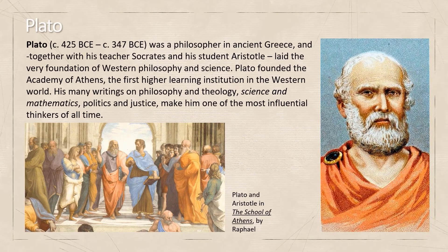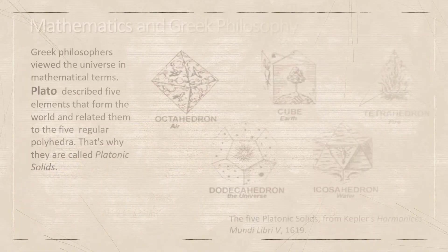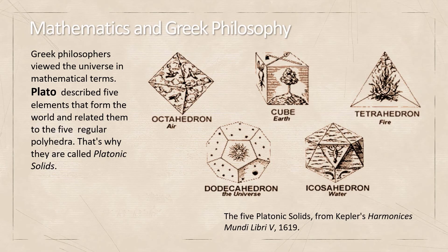Plato was a philosopher in ancient Greece. He, along with his teacher Socrates and student Aristotle, laid the foundation of Western philosophy and science, which is inspired by the philosophy of Pythagoras. His works made him one of the most influential thinkers of all time. Greek philosophers viewed the universe in mathematical terms. Plato described five elements that form the world, related to five regular polyhedra — that's why they are called platonic solids.